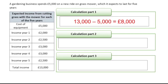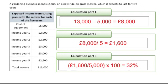We know it's over five years, so we get that £8,000 and divide it by five, which gives £1,600. But now we're looking for the average rate of return. So that £1,600 divided by £5,000, times by 100, and it is 32%.